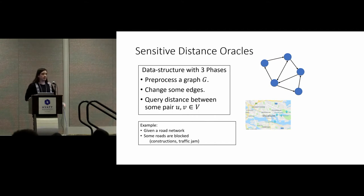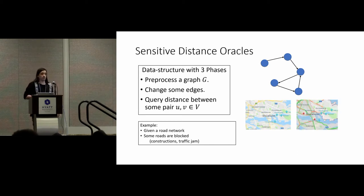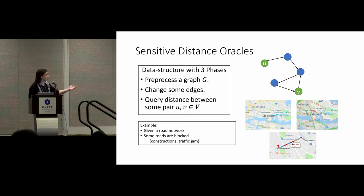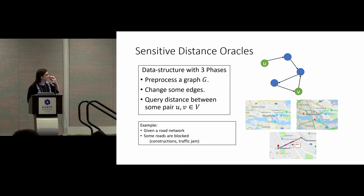After this preprocessing, what happens next is that maybe some of the edges are going to be removed. You can think of it as the traffic conditions change — maybe some roads are blocked, maybe there's a traffic jam. Then in the last phase, someone is going to ask for the distance between two nodes, which you can interpret as: what's the shortest path given the current traffic conditions? Typically we try to minimize the preprocessing, update, and query time while also minimizing memory.